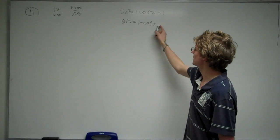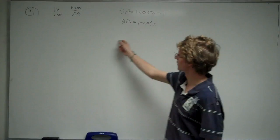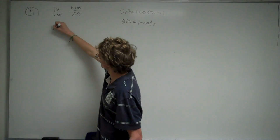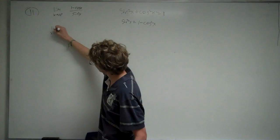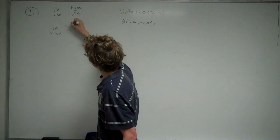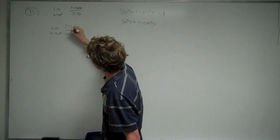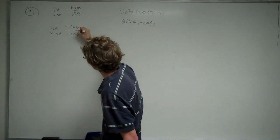So we can take this value here, 1 minus cosine squared of x, and sub it in for the sine squared of x here. So now what we have is the limit as x approaches 0 from the right, 1 minus cosine of x over 1 minus cosine squared of x.